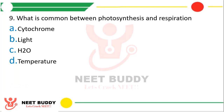Question 9. What is common between photosynthesis and respiration — option A: Cytochrome, option B: Light, option C: Water, or option D: Temperature? The correct answer is option A, cytochrome.